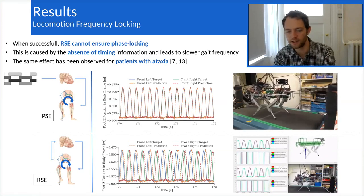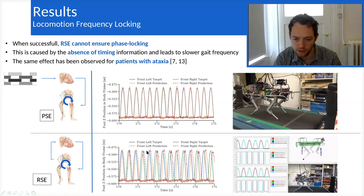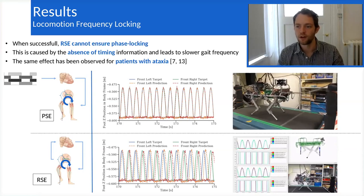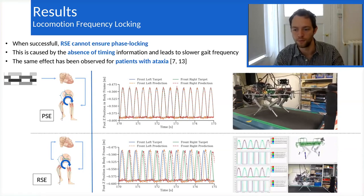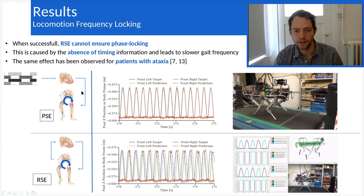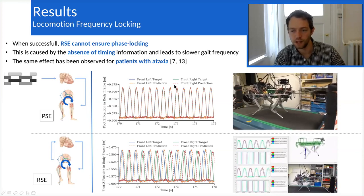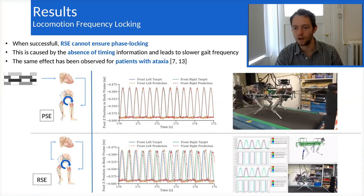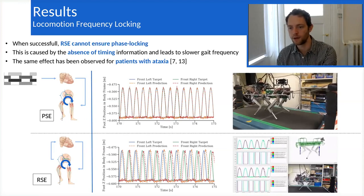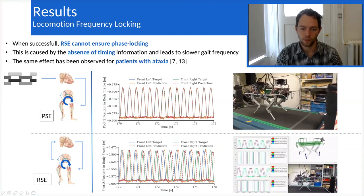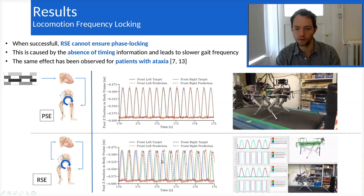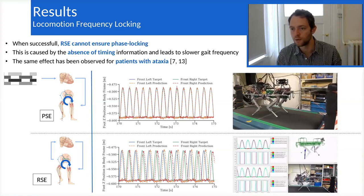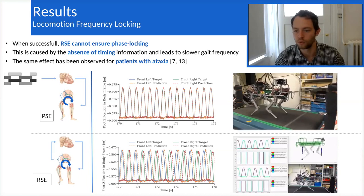which means that the frequency of locomotion is different from what the system is being planned for. And this effect is quite interesting because in patients with ataxia, we know that when this disease happens, the frequency of the gait can be affected by the problem of ataxia. So we believe that this can provide some information about why this would happen in this case and not in normal patients.